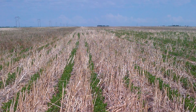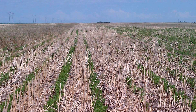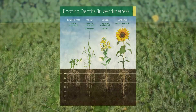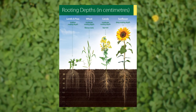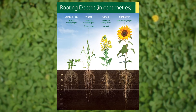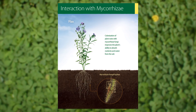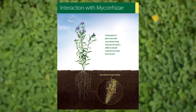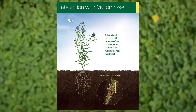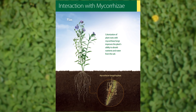Advantages of crop rotation start below ground. Different rooting depths and root types allow varied access to water and nutrients. Diverse rotations will encourage diversity in soil microorganism populations, leading to increased yields.